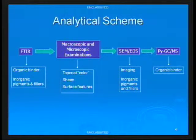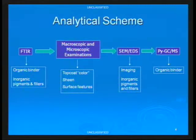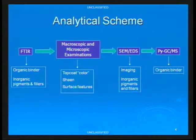Normally you would start with visual microscopic examinations, but because we're dealing with just white paints we needed to screen in some way. So we started with FTIR, then we did the visual microscopic followed by SEM and pyrolysis. We also used a scheme such that anything discriminated by the first technique was not brought forward to subsequent techniques.